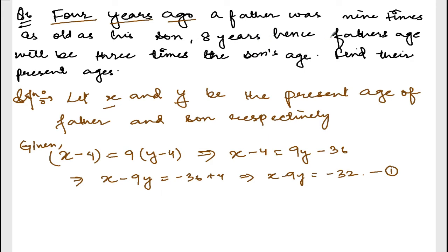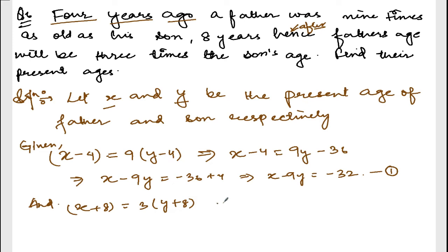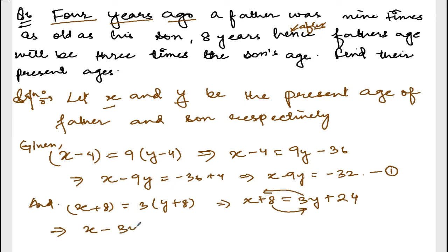8 years hence means after 8 years. If X is now, after 8 years it will be X plus 8. Father's age will be 3 times son's age, so X plus 8 equals 3 into (Y plus 8), giving 3Y plus 24. Rearranging: X minus 3Y is equal to 24 minus 8, which is 16. This is equation number 2.